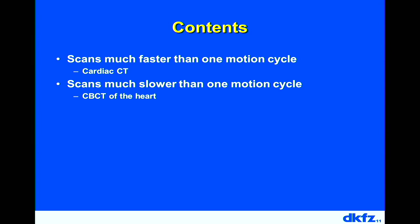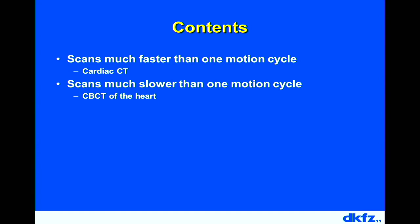This presentation is divided in two parts. First, we talk about diagnostic cardiac CT, where the CT system rotates very quickly — much faster than one motion cycle. Second, there are other systems used during interventions, such as C-arm cone beam CT systems, which rotate very slowly — slower than one cardiac motion cycle and even slower than one respiratory motion cycle. We can also think about imaging moving objects like lung and heart with these systems.